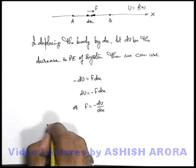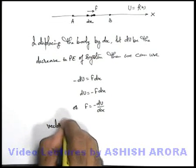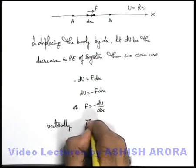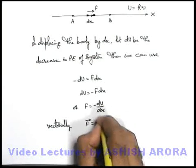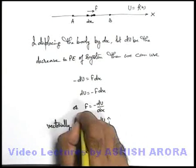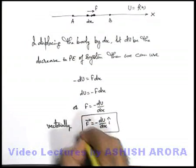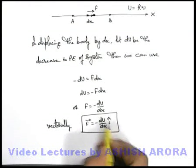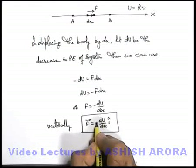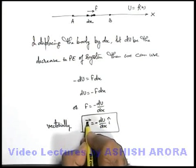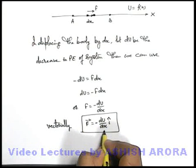This can be written vectorially as: F vector equals minus of dU by dx, times i-cap. This relation is very important to keep in mind, because this negative sign shows that force always acts in a direction where potential energy decreases.